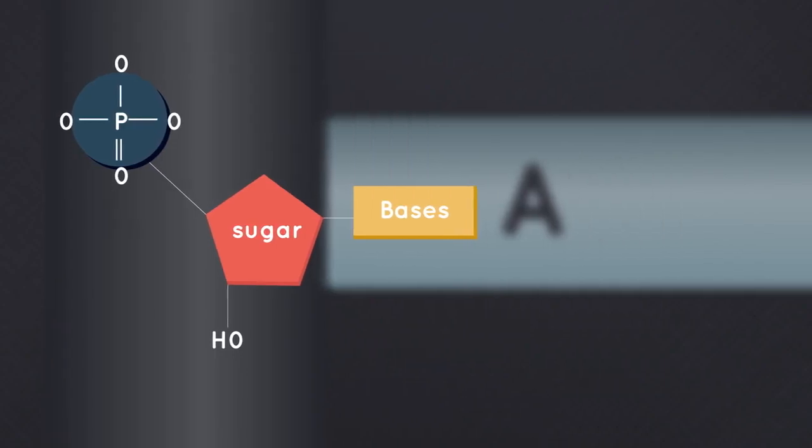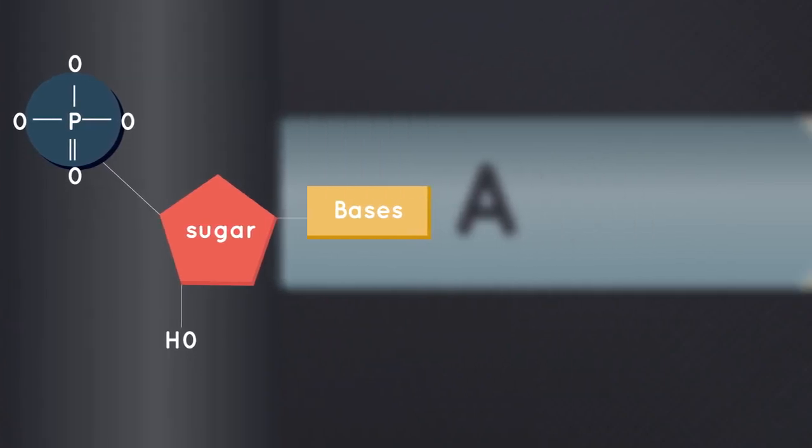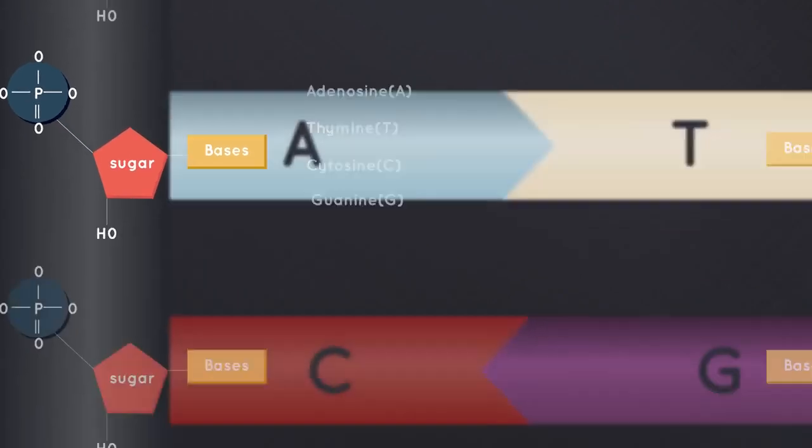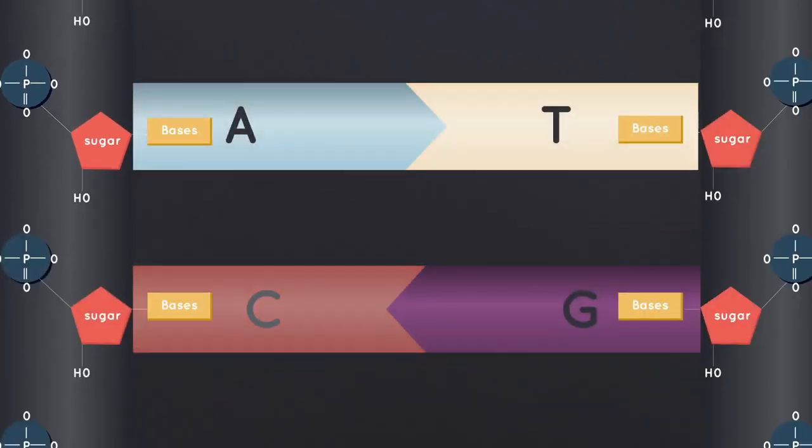When people think of DNA, they usually think of these bases. There are four bases: adenine, thymine, cytosine and guanine. But just remember A, T, C and G. And it is best to remember in this order: A, T, C, G.